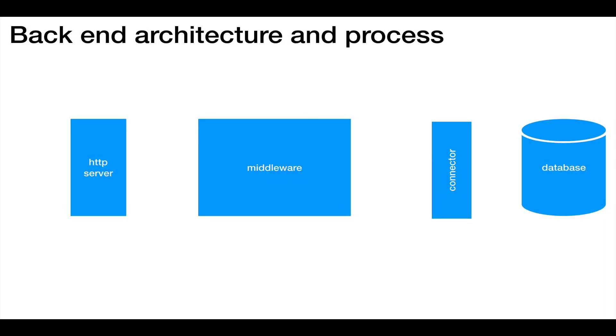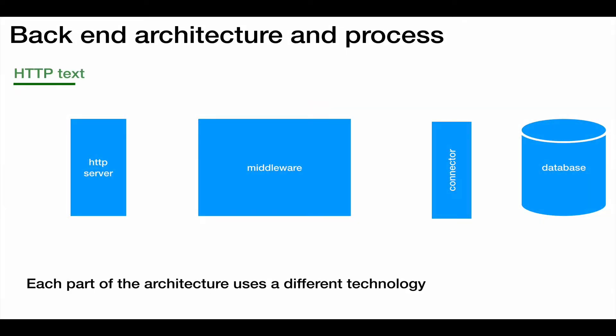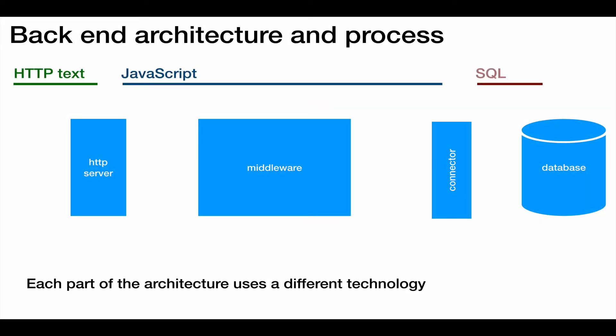The back-end architecture has three layers. First, the network layer provided by Node, and that understands HTTP. Second, the middleware layer that is built out of JavaScript using Express and Connects. And finally, the persistence layer that speaks SQL to a Postgres database server.